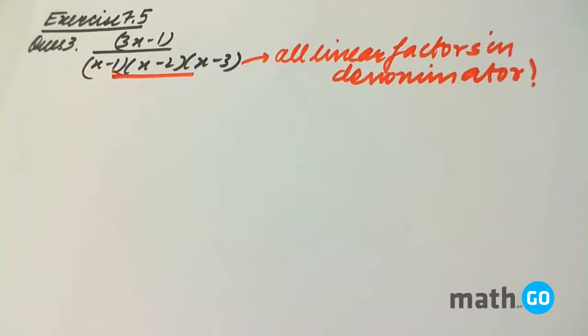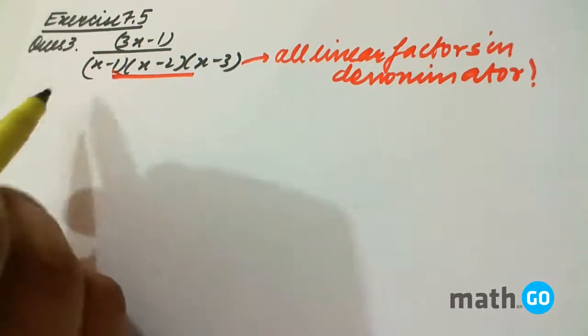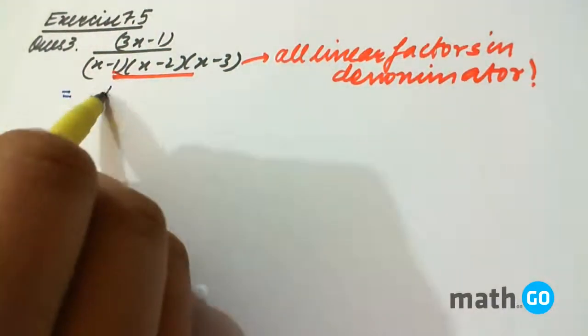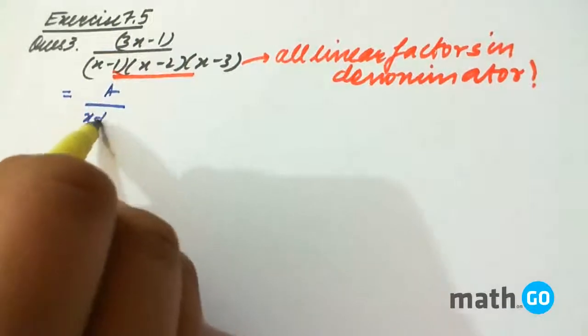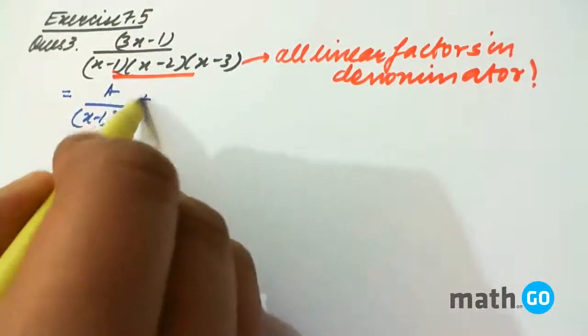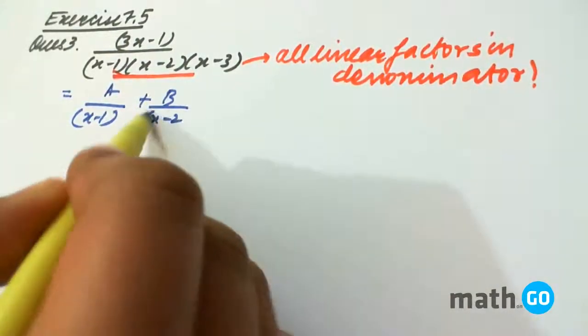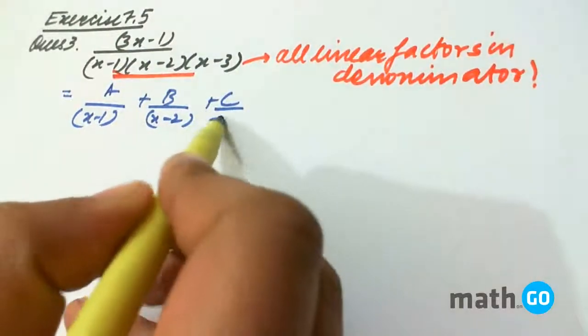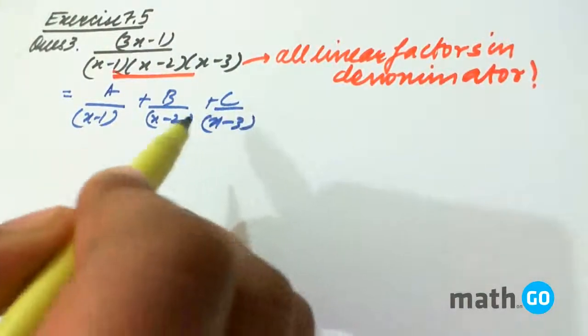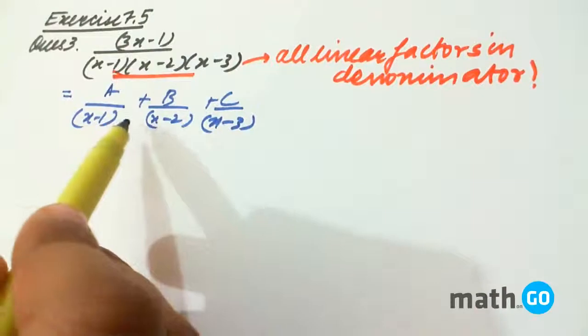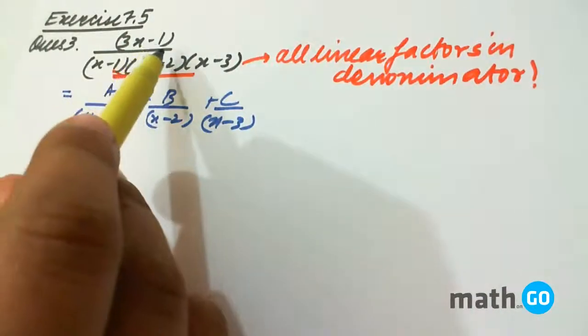And this can always be converted to this form, where A, B, and C are constants. Because obviously it is easy to integrate this in comparison to this.